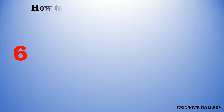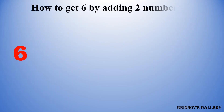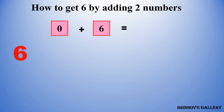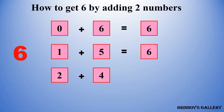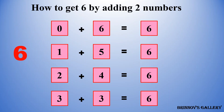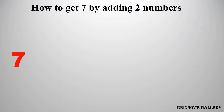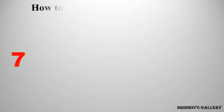How to get 6? By adding two numbers. 0 plus 6 is equal to 6. 1 plus 5 is equal to 6. 2 plus 4 is equal to 6. 3 plus 3 is equal to 6. How to get 7?